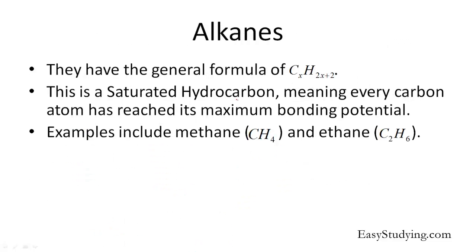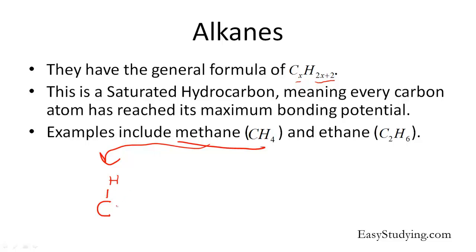Our first group is the alkanes. They have the general formula — the proportion I was discussing earlier — of CxH(2x+2). So for every x carbons, we multiply x by 2 and add 2 to get the number of hydrogens. The alkanes are a saturated hydrocarbon group, meaning that every carbon has its maximum bond potential — each carbon has all four bonds filled. One example is methane, CH4. The structure appears as a single C atom; there's only one carbon and four hydrogens. You can see that when I say saturated hydrocarbon, all four bonds are taken up.